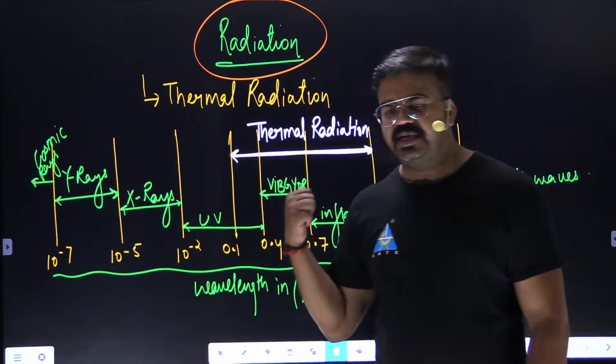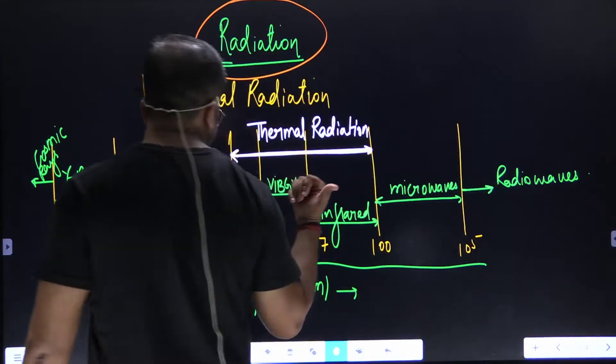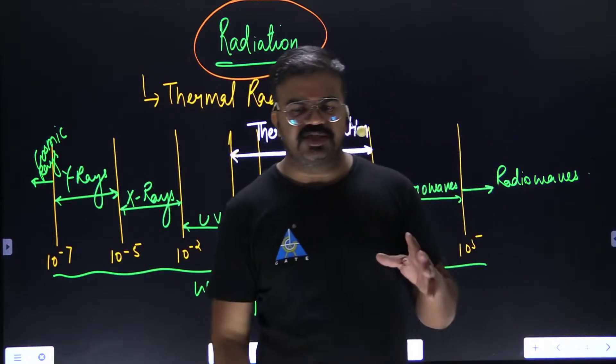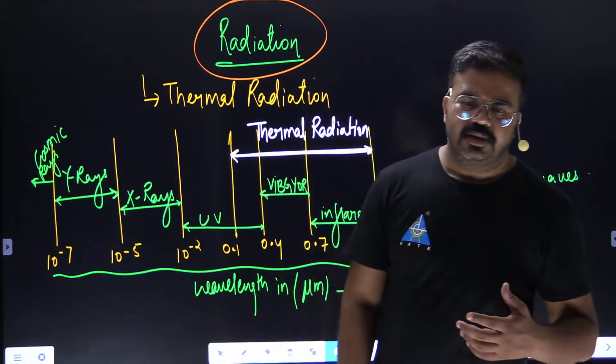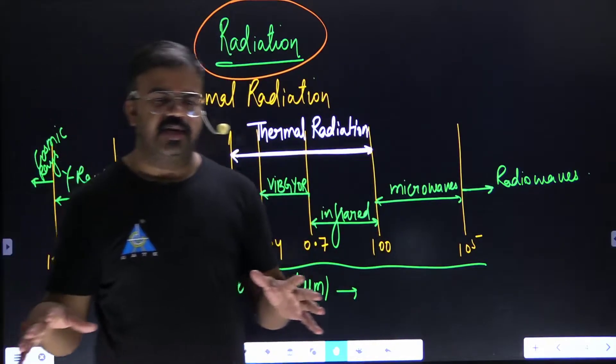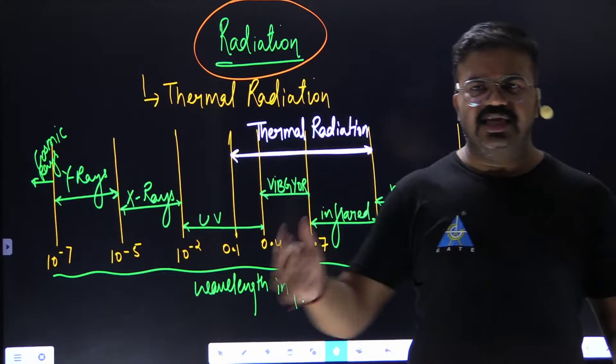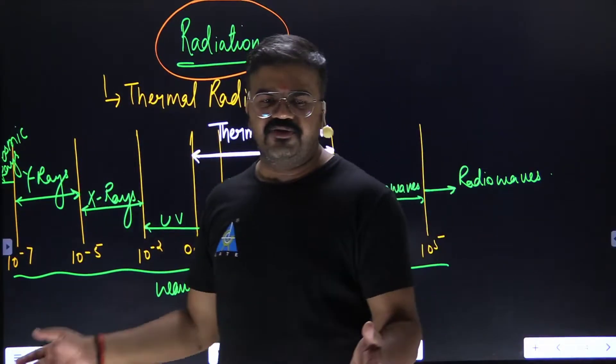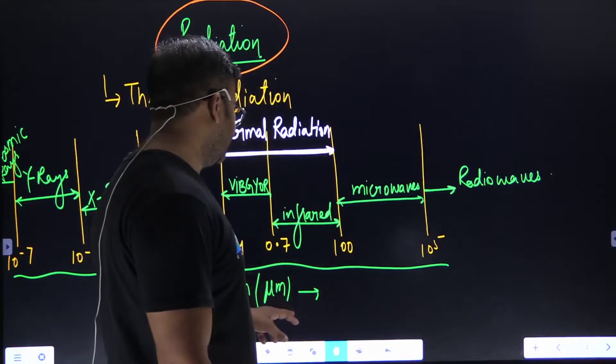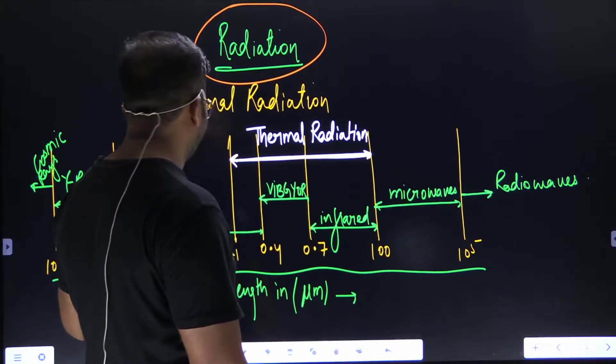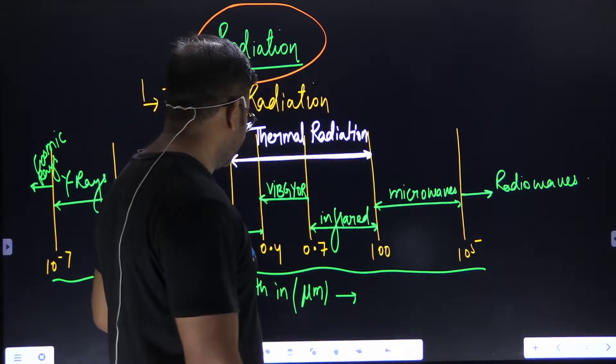Similar is the case with radio waves. For example, this communication technology is based on radio waves. Now if you see, the radio waves are all around us. They're passing all around. So are they causing heat? No. Therefore radio waves can safely be excluded out of this context.